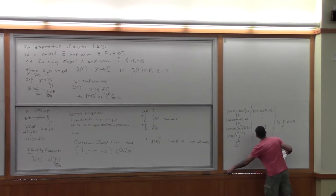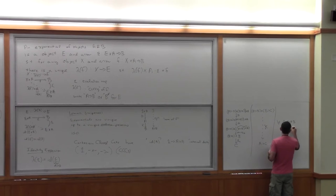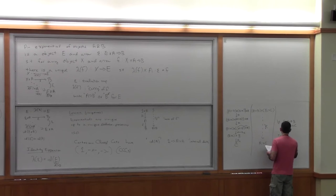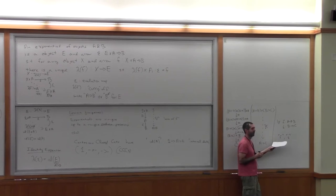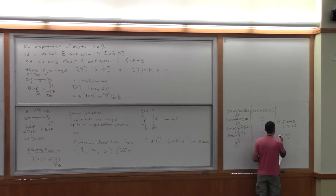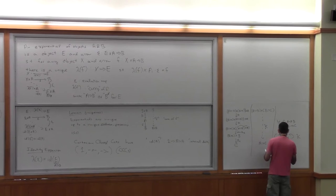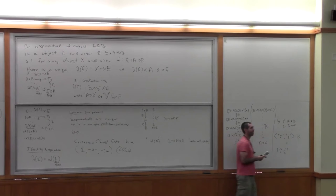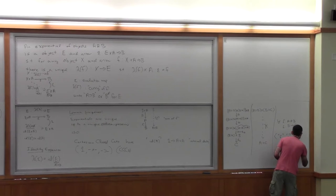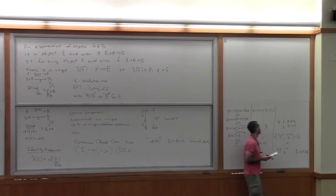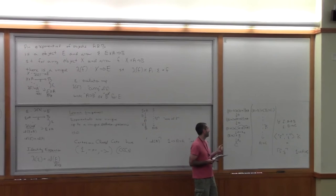For any arrows f from A to B and g from B to C, if we take the name of f and the name of g — which are global elements of their respective exponentials — and tuple them, then compose with the internal composition kappa, we get the name of the composite. So the internal composition behaves just like the actual composition.